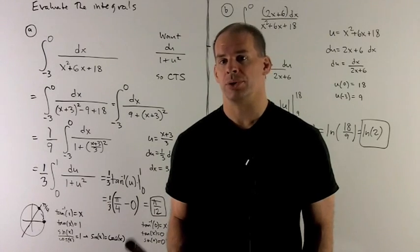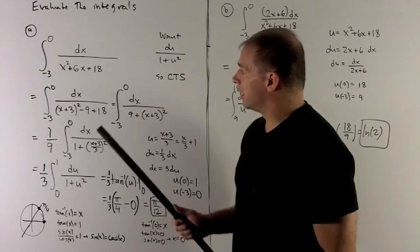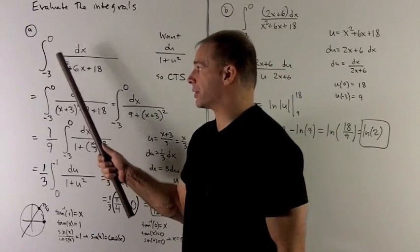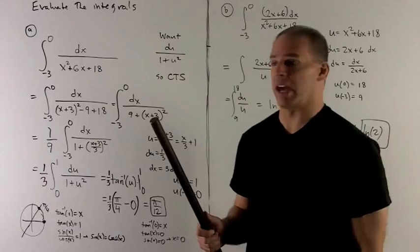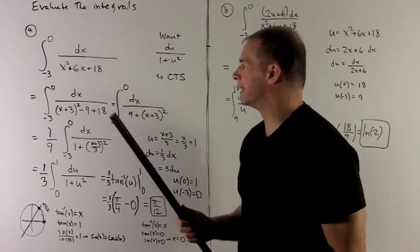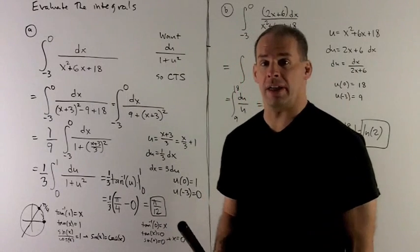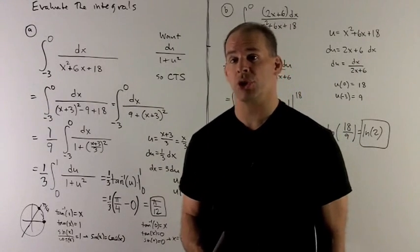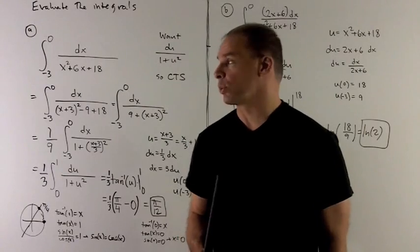Evaluate the following integrals using a trig substitution. For my first definite integral, we're going to go from minus 3 to 0, dx over x squared plus 6x plus 18. If you note, this really doesn't look like anything we've done before. We're pretty much going on faith, since we're in the inverse trig section, that an inverse trig substitution is going to make this work.